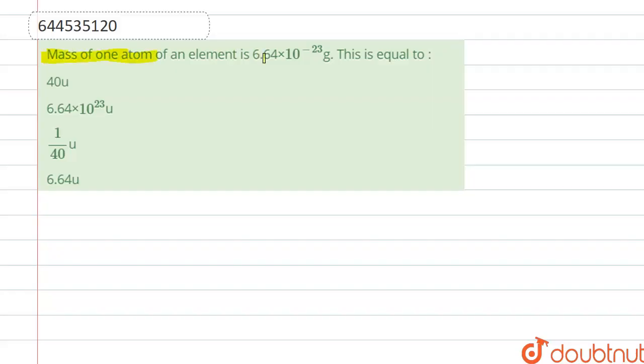This is equal to... So here, the mass of one atom is given, which is equal to 6.64 × 10^-23 gram.